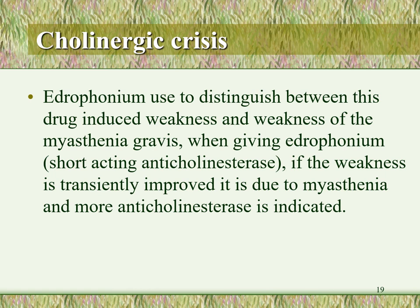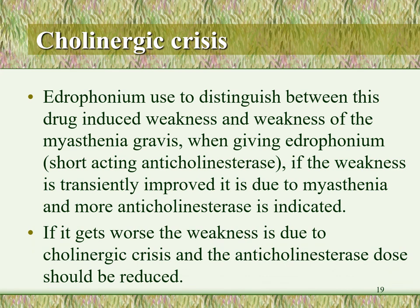Therefore, edrophonium is used to distinguish between drug-induced weakness from cholinergic crisis and weakness from myasthenia gravis. If edrophonium partially improves the weakness, the cause is myasthenia gravis and the physician should increase the dose of anticholinesterase — for example, from 5 mg to 7.5 mg. If edrophonium worsens the weakness, the cause is cholinergic crisis and the anticholinesterase dose should be reduced, since it is causing depolarizing blockade.